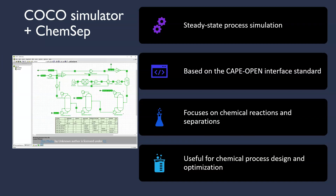Next is Coco Simulator combined with ChemSafe. This combination offers a comprehensive steady state process simulation platform. Chemical engineers can use this software combination to model and simulate chemical reactions and separation, gaining insight into process behavior and optimizing their operations.